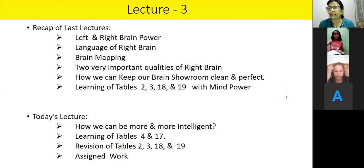Two very important qualities of right brain - ek toho real and imaginary ki baat hai, aur ek hiya hai ki woh chote bade bhe koi fark nhi sambazta hai. How we can keep our brain showroom clean and perfect? Hamne showroom ki baat kari thi. Jab hum cheejo ko revise karte rete, to hummeare mind mein aage aajatii hai. Jab hum behoor time unne revise nahi karte hai, to humme pichhe chali jati hai. Learning of tables with mind power. Abhi tak hum 2, 3, 18 and 19 tables kar chukai hai, right?